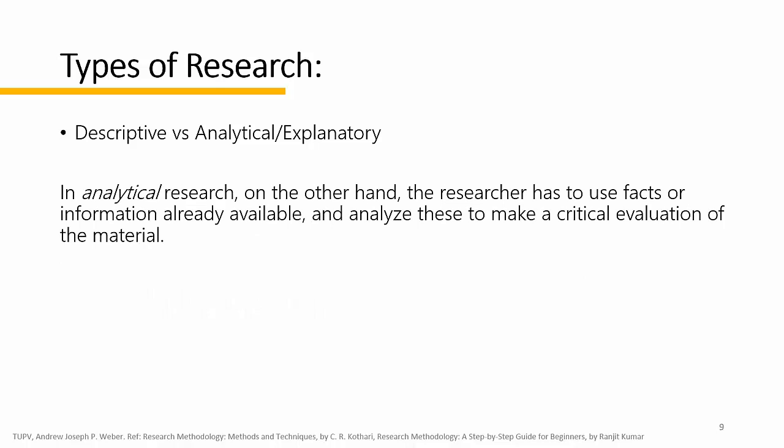On the contrary, in analytical research the researcher has to use facts or information that are already available and makes an analysis and critical evaluation of the material. For example, in chemistry there are many different chemical properties such as valence electrons, atomic number, number of protons, number of neutrons, boiling point, freezing point, conductivity, and resistivity. These pieces of information are already available.